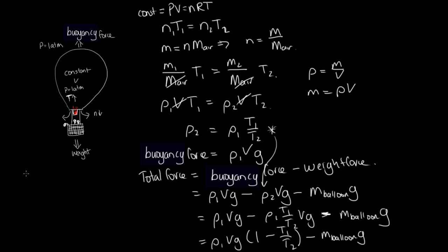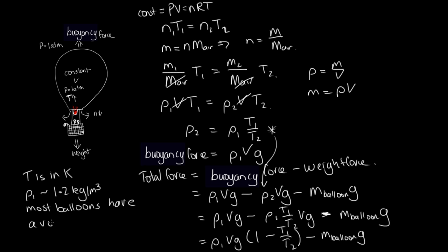Some important things to remember with this equation: the temperature must be in Kelvin — we cannot substitute temperature in degrees Celsius; we have to convert to Kelvin. The initial density ρ₁ is around 1.2 kilograms per metre cubed — that's the density of the air all around us. Most balloons have a volume of around 2,800 metres cubed. This equation for the total force felt by a hot air balloon explains why the hot air balloon moves up.